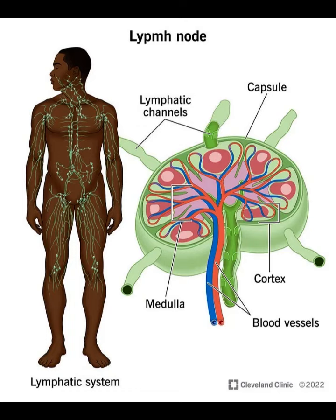Welcome to chapter 9, the lymphatic system for pathology. This is a one-way system composed of lymph, lymphatic vessels, lymphocytes, lymphatic tissues, lymph nodes, organs, and glands. Lymphoid tissue is found in red bone marrow, the thymus gland, the spleen, and mucosa-associated lymphoid tissue, otherwise known as MALT, such as tonsils and Peyer's patches.